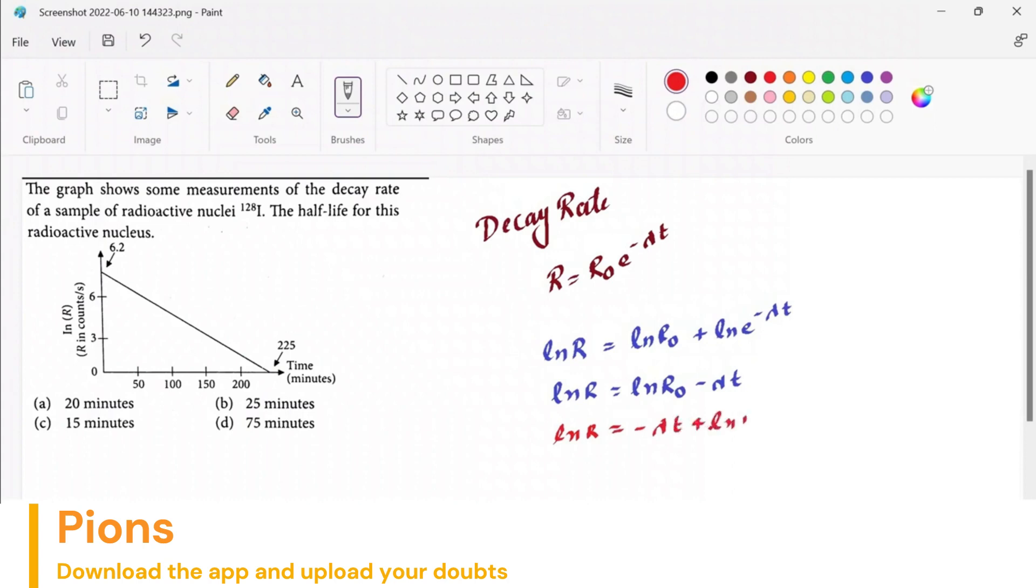Y is represented by ln R, which you can see here. The x-axis is represented by time t, and λ is the disintegration constant that we can find from the slope.